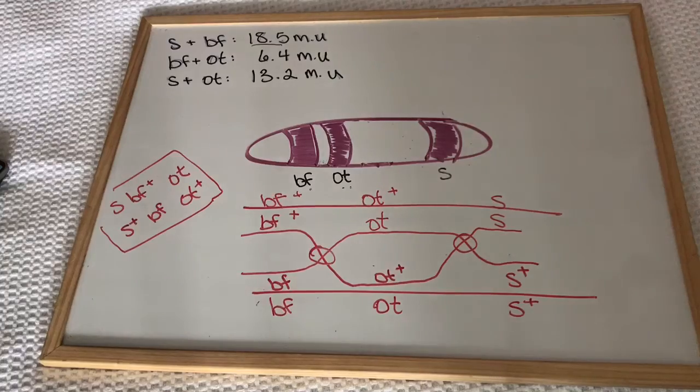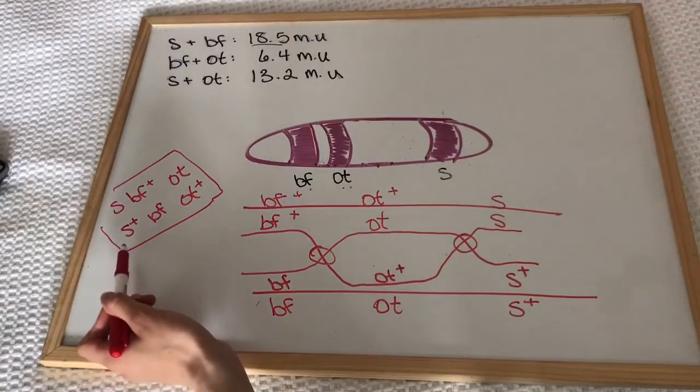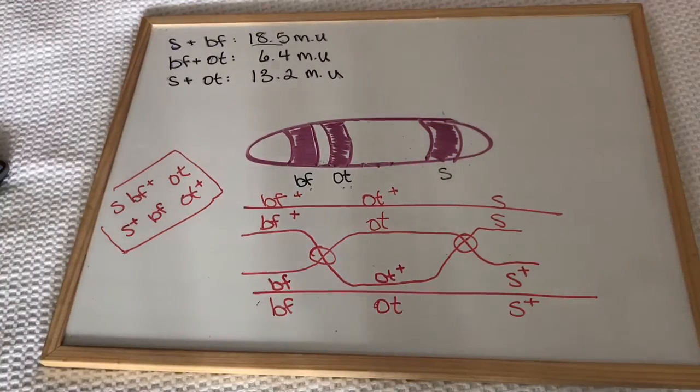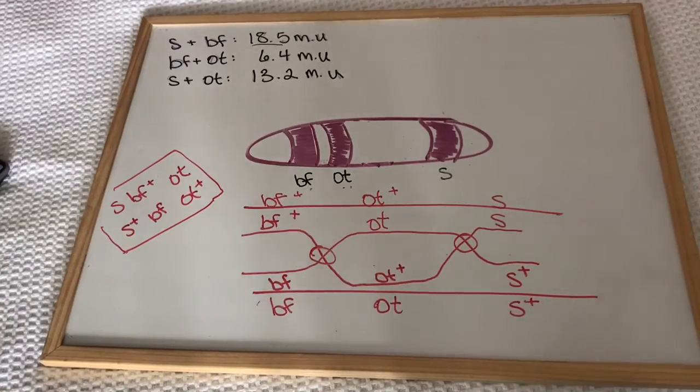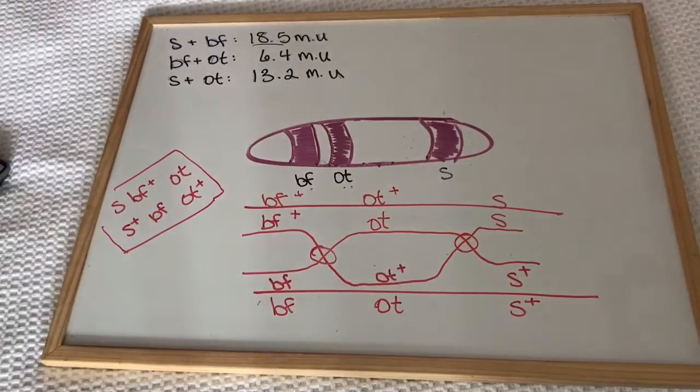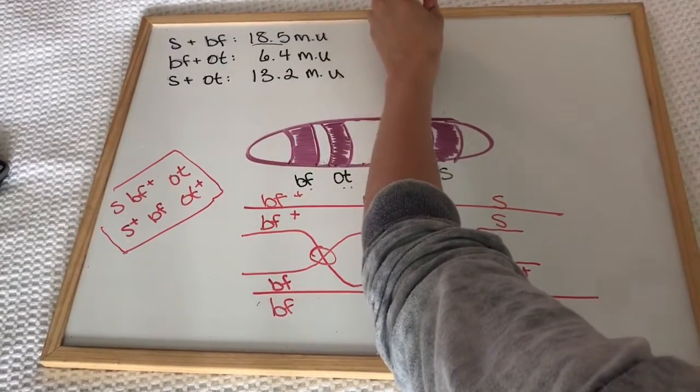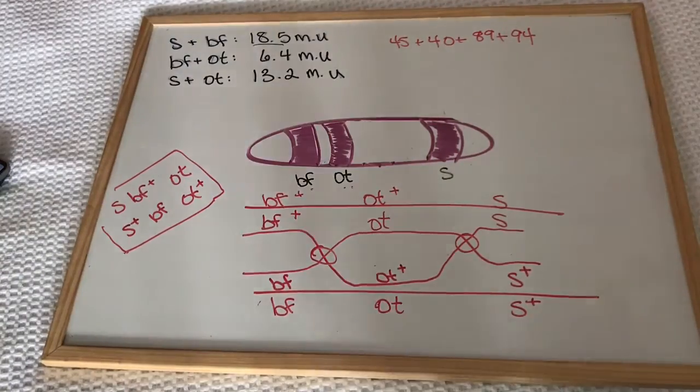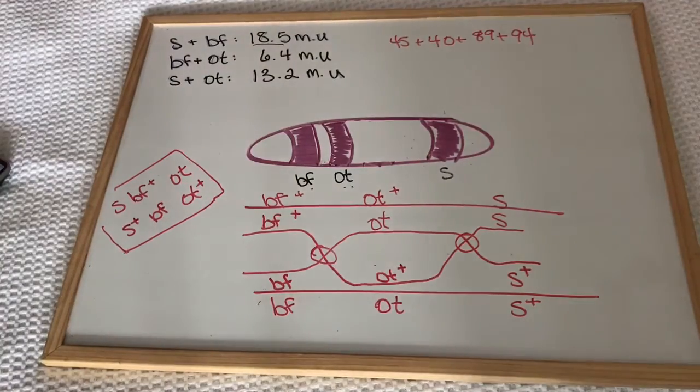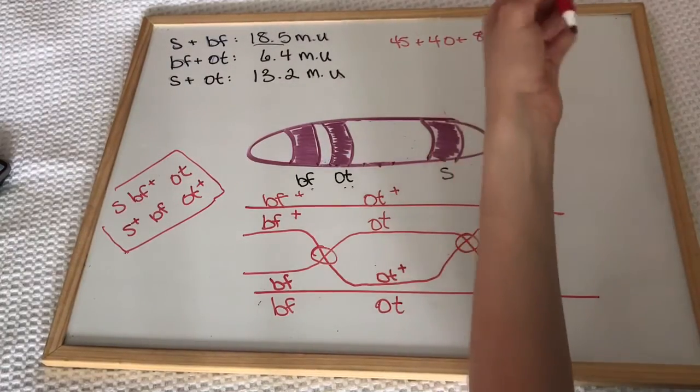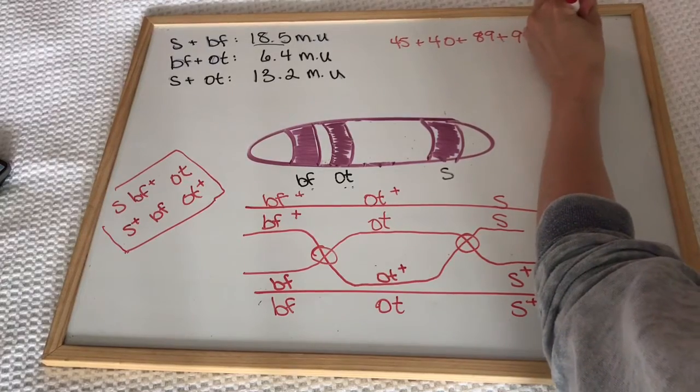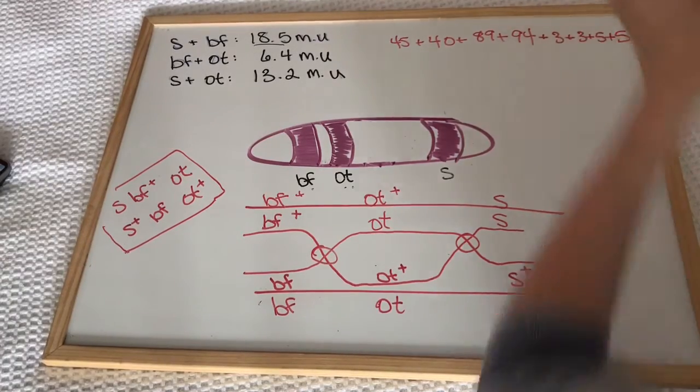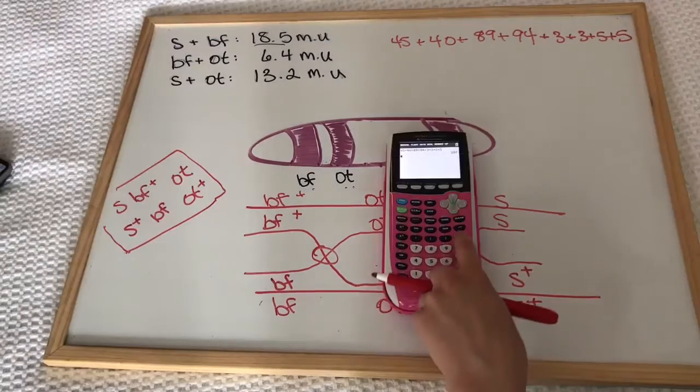So what does that mean about our 19.6 and our 18.5? This means that when we were calculating the distance between BF and S, we didn't actually count these two double recombinants because they look as if they are the parental genotype, even though there is a double recombinant happening. Because of this, we only added up 45 plus 40 plus 89 plus 94, when we should have also added in these two double recombinants. Because they are double recombinants, we shouldn't just add them in once—we should add them in twice. So it should have been 45 plus 40 plus 89 plus 94 plus 3 plus 3 plus 5 plus 5. If you do that on your calculator and divide it by the 1,448, you get exactly 19.6 mapping units.